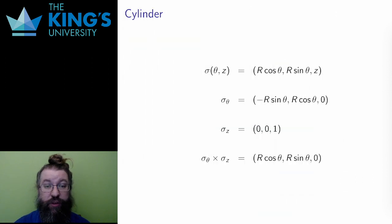And here is the calculation for the cylinder. The same setup. Write the parametrization, in this case z and theta, since those are the parameters, the radius is fixed. Then differentiate in both parameters and take the cross product.